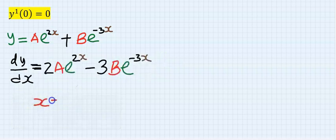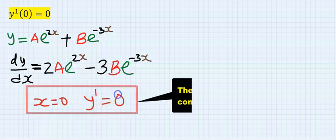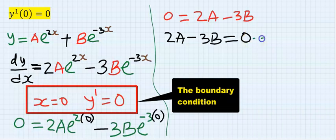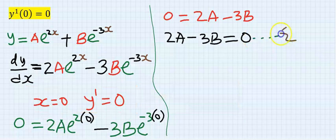Next, we substitute at x equal to zero, y prime is equal to zero. And this becomes our equation two.